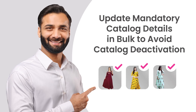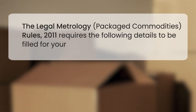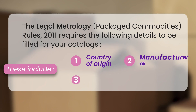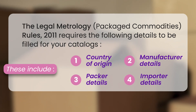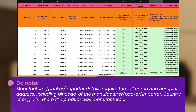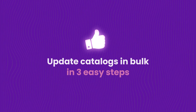Update catalog details in bulk with all mandatory details so your catalogs don't get deactivated. According to the Legal Metrology Packaged Commodities Rule 2011, mandatory details for a listing include the country of origin, manufacturer details, packer details, and importer details. Manufacturer, packer, or importer details require the full name and complete address including pin code. Country of origin is the country the product was manufactured in. We reserve the right to delist catalogs that do not have any of the four mandatory details.